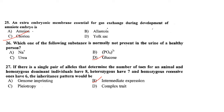Which substance is normally present in the urine of a healthy person? Glucose is not normally found in the urine of a healthy person. Regarding genetics — if a single pair of alleles determines the number of toes and homozygous dominant individuals have eight, heterozygous have seven, and homozygous recessive have six, the inheritance pattern would be intermediate expression. Answer is option B.